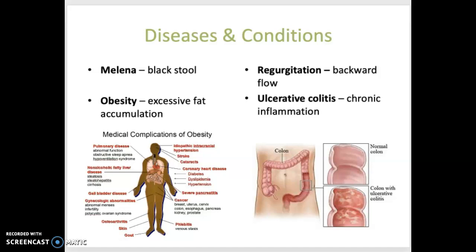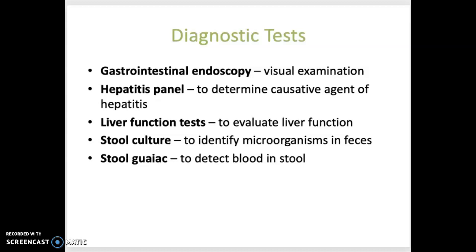Ulcerative colitis is a chronic inflammatory disease of the colon. The lining of the colon is affected and often it develops bleeding ulcers and can be very painful. Diagnostic tests include gastrointestinal endoscopy, which is the visual examination of the GI tract. A hepatitis panel involves blood tests to determine the specific virus that is causing hepatitis, as there are different forms caused by different types of viruses. Liver function tests are blood tests to evaluate liver function and help with the diagnosis of liver disease. A stool culture is a test to identify microorganisms in feces that could be causing a GI infection. A stool guaiac is a test where a substance is applied to stool to detect the presence of blood.